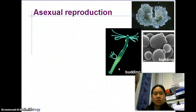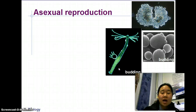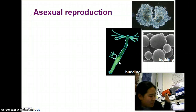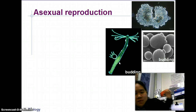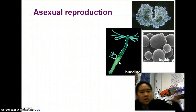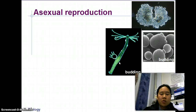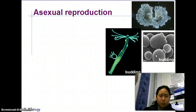Some examples of asexual reproduction include budding. With budding, something like yeast will grow a bud off itself, and when it's big enough it just pops off. It's a good thing humans don't do budding, but yeast will do budding like this right here.